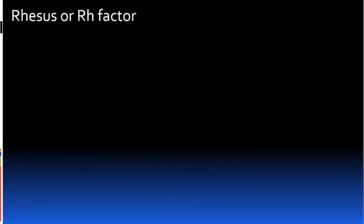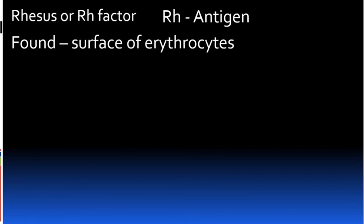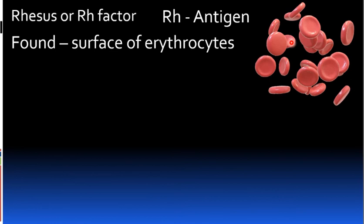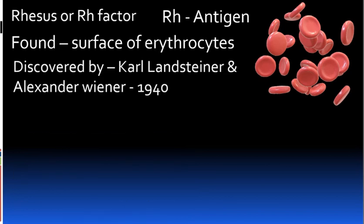Next is the Rhesus or Rh factor. The Rh factor is an antigen present on the surface of erythrocytes (RBCs). The Rh antigen was discovered by Karl Landsteiner and Alexander Wiener in 1940.